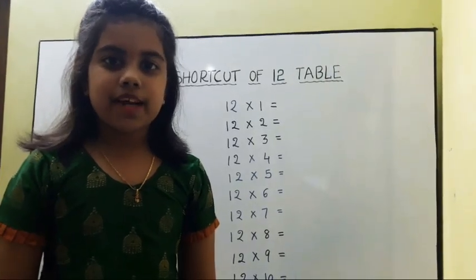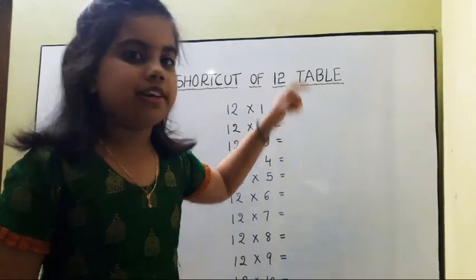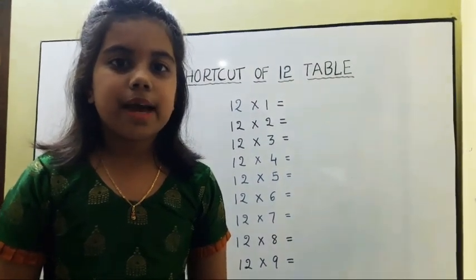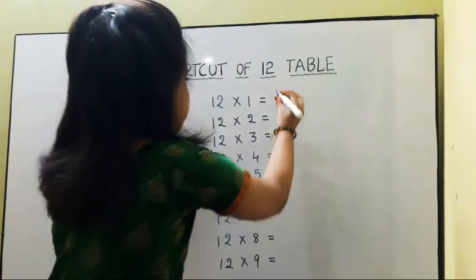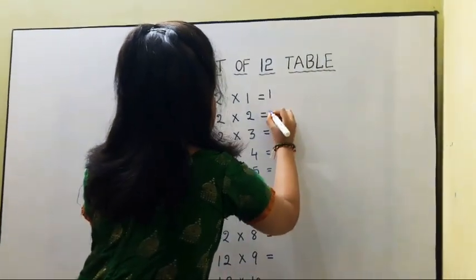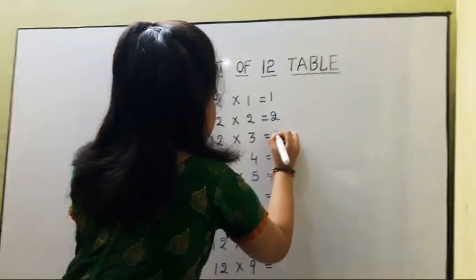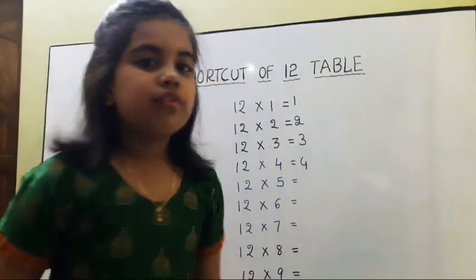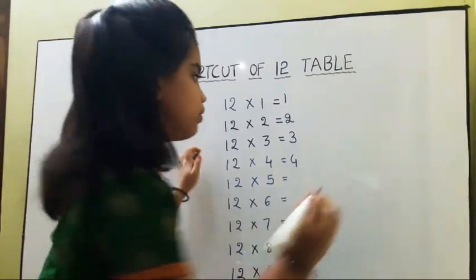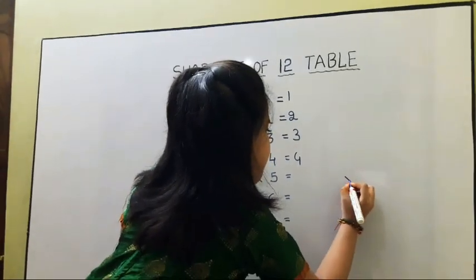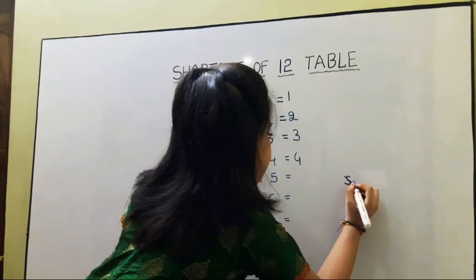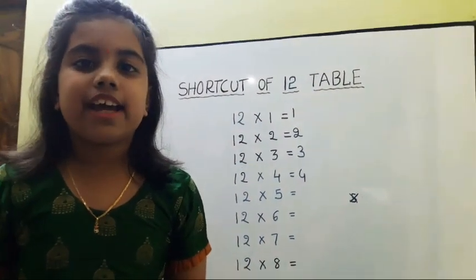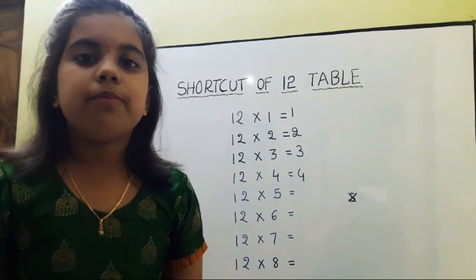First I am explaining about the 12 table. First we should write 1 to 4 numbers top to bottom. We should skip 5. Then we should write 6 to 10 numbers top to bottom.